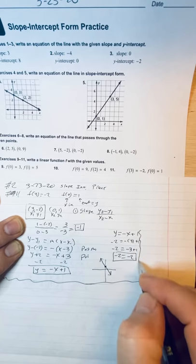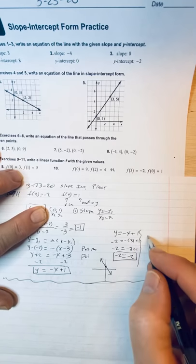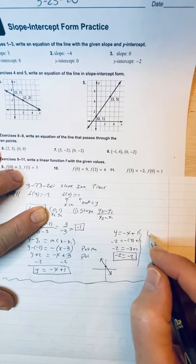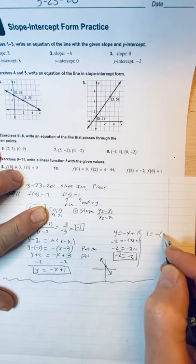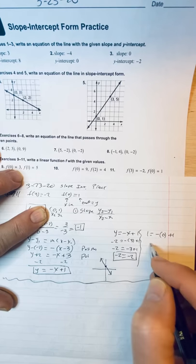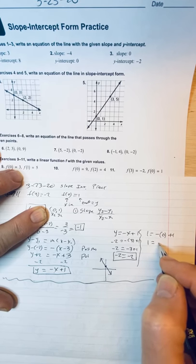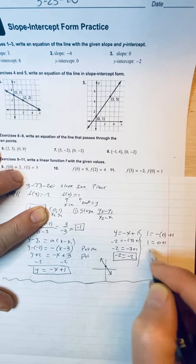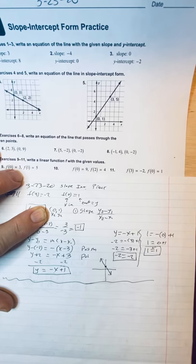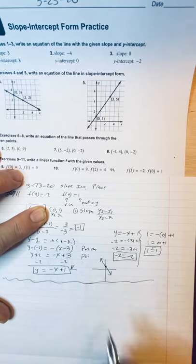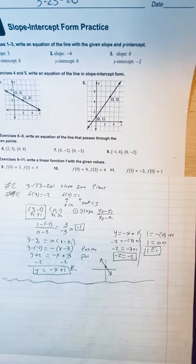And we can also test it on the second one here. And so, I'm going to say y is 1. 1 equals opposite of whatever x is, which is 0 plus 1. And 1 equals 0 plus 1. And 1 equals 1. And so, it checks. So, that equation, this equation here, is true for both points. So, we're good to go.